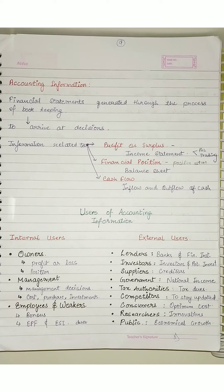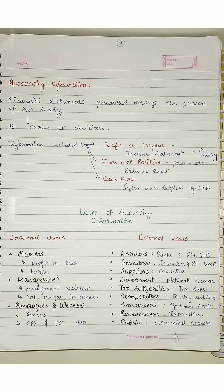And the last is comparison — accounting information is important for intra-firm and inter-firm comparison. What does intra-firm mean — think about it and tell me, this is your homework for today. And inter-firm comparison — that is also your homework.